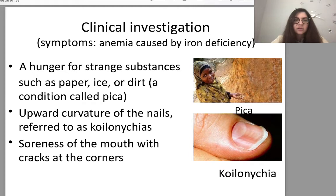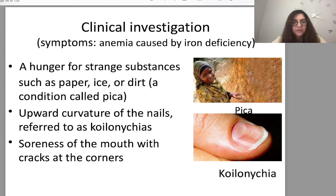Additional signs include: hunger for strange substances such as paper, ice, or dirt — a condition called pica; upward curvature of the nails referred to as koilonychia; and soreness of the mouth with cracks at the corners. You can see pictures of koilonychia and pica here.